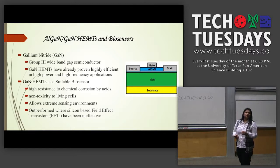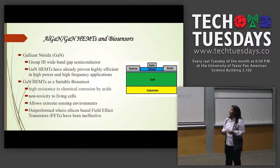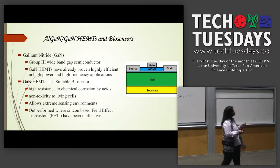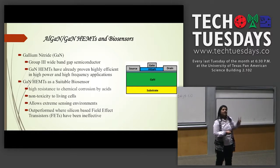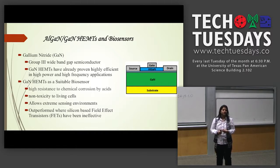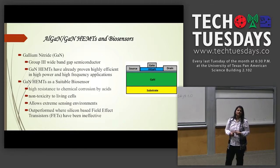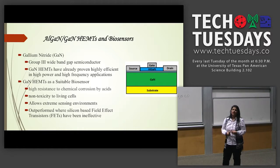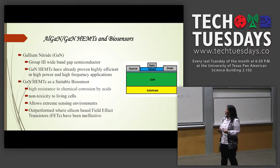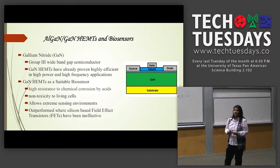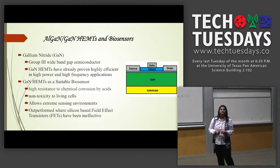The material we are using here at UTPA is the AlGaN-GaN HEMT. This gallium nitride material is a combination from the three-five group. It is very important for biosensing and has other potentials. My graduate students developed some devices, tested them, and had good results. The machine we have is supported by the National Science Foundation's MRI Grant.